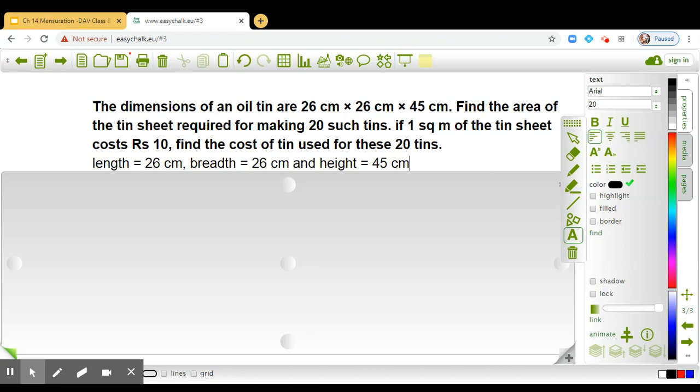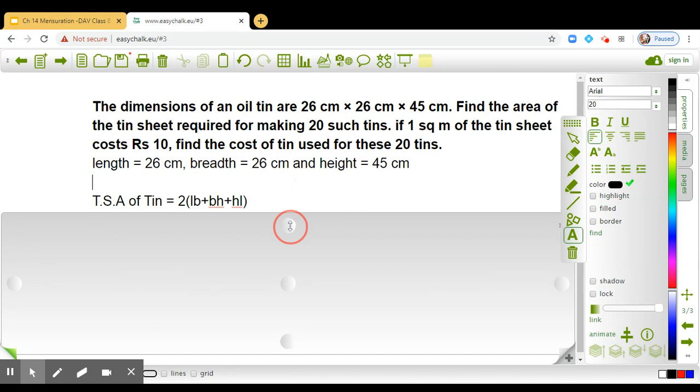What is the total surface area of a cuboid? What is the formula? Very nice. It is 2 into L into B plus B into H plus H into L.